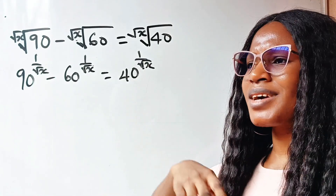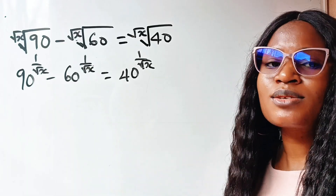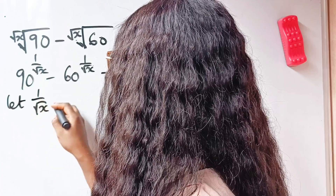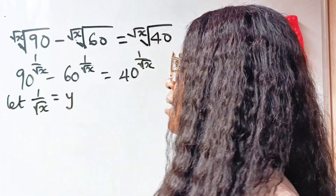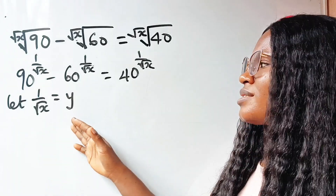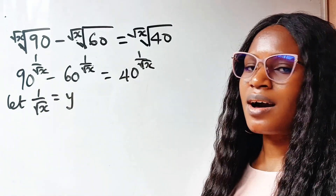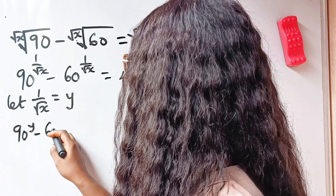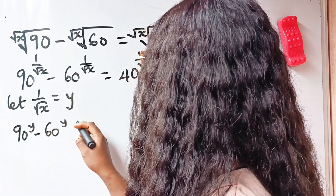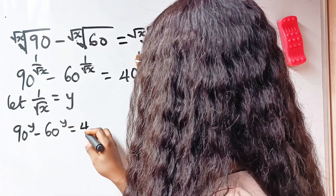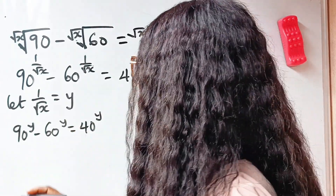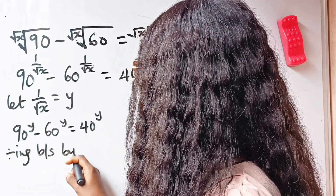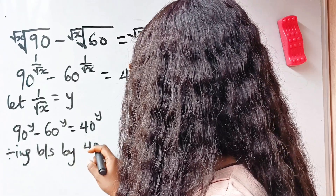We have 1 over root x repeated three times, so let's assign a letter to it. Let 1 over root x equal y. That means we write this as 90 to the power of y minus 60 to the power of y is equal to 40 to the power of y.